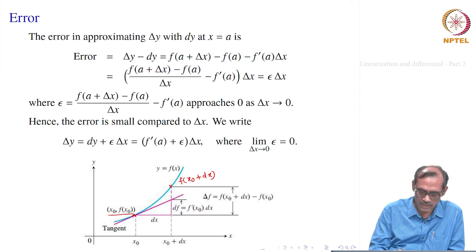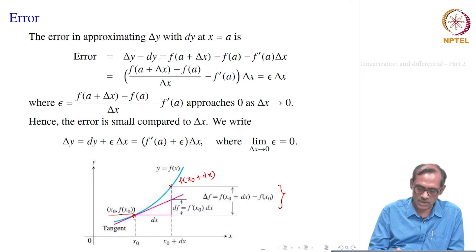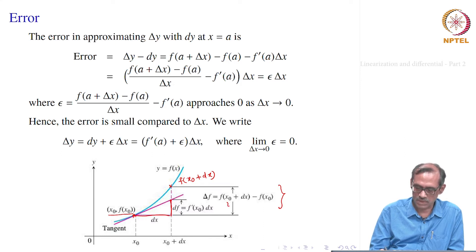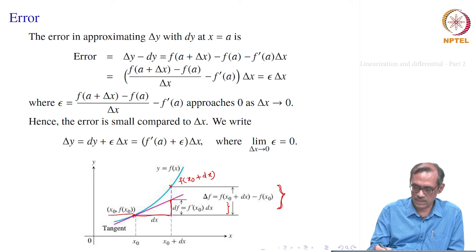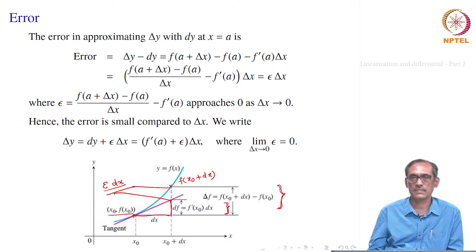This point is f of x₀, so the difference between those heights is delta f — that is the increment in f at the point x₀. And what is df? df is really f prime of x₀ times the increment. f prime of x₀ is the slope, so slope is this height divided by dx, and when you multiply that with dx you get df. So the error is in approximating this full height delta f with the smaller height df, and the remaining piece is the error, which is epsilon times delta x, where epsilon goes to 0.